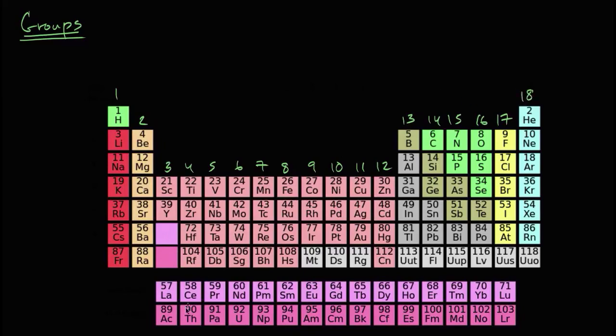Some of you might be thinking, what about these F block elements over here? If we were to properly do the periodic table, we would shift all of these, everything from the D block and P block rightwards and make room for these F block elements. But the convention is that we don't number them.